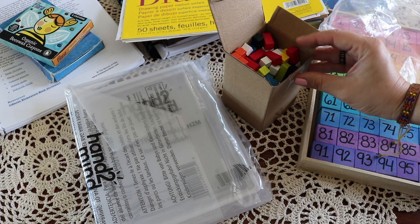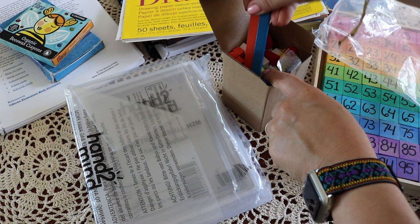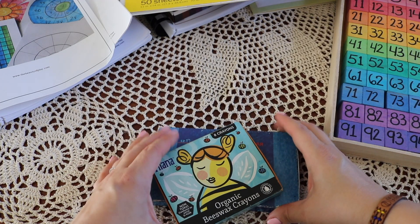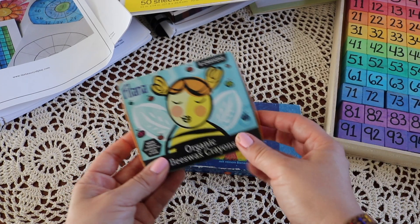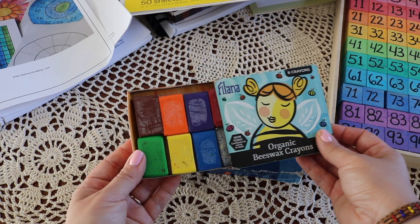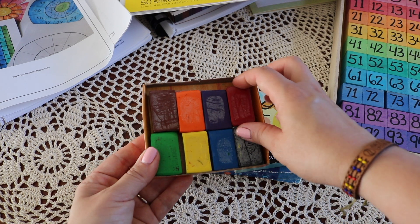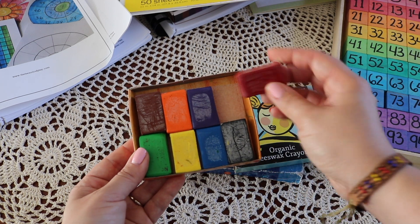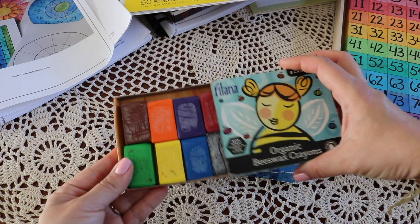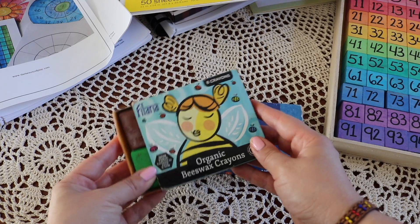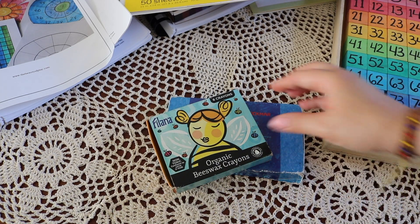Also recommended are base 10 rods, which I decided not to purchase because we have Montessori beads. Block crayons: we love both our Stockmar brand and Felana brand. These are expensive crayons, but I'll tell you that they're worth it. The quality is a different type of buttery pigment than regular crayons. They will last you several years. We've owned our sets for about four, maybe five years now.